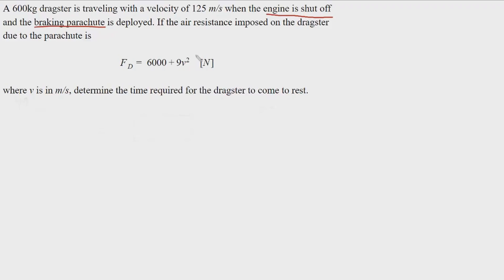In this video we're going to do a dynamics problem. A 600 kilogram dragster is traveling with a velocity of 125 meters per second when the engine is shut off — this is a key phrase — and the braking parachute is deployed. If the air resistance imposed on the dragster due to the parachute follows this equation, dependent on velocity and in Newtons where v is in meters per second, determine the time required for the dragster to come to rest.